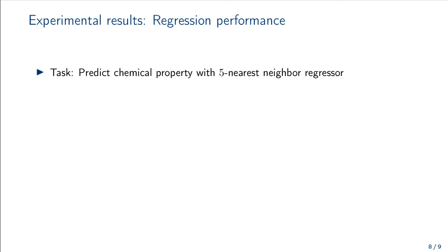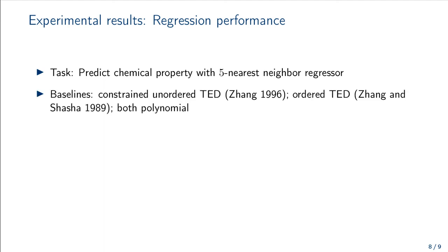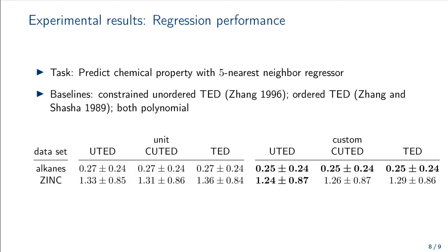Finally, we investigated the utility of our metric to predict chemical properties, namely the boiling point for alkanes, and the chemical stability for zinc. We applied a 5 nearest neighbor regressor, and our baselines were the constrained unordered tree edit distance, as well as the ordered tree edit distance, which are both polynomial. Our measure is the root mean square error in 15-fold cross-validation. We observe that all methods perform almost the same for alkanes. Custom costs improve performance slightly. For zinc, we see a clear advantage of custom costs, and a slight advantage for the unordered tree edit distance compared to the constrained and ordered version.